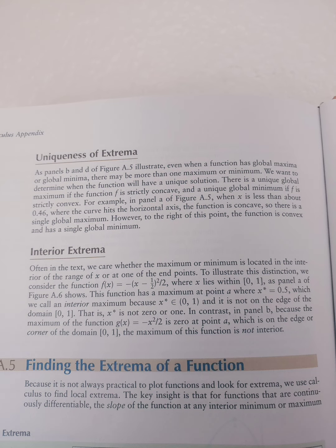For example, in panel A of figure A.5, when x is less than about 0.46, where the curve hits the horizontal axis, the function is concave, so there is a single global maximum. However, to the right of this point, the function is convex and has a single global minimum.